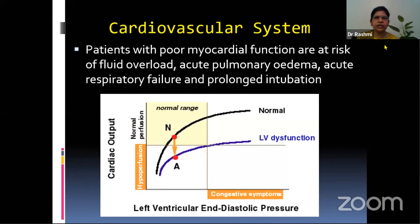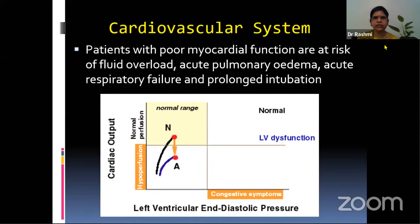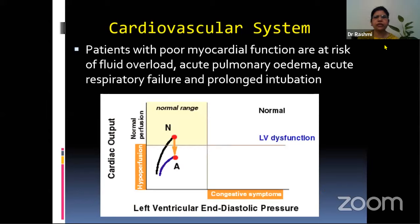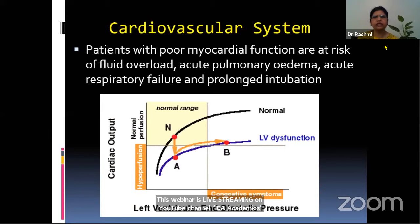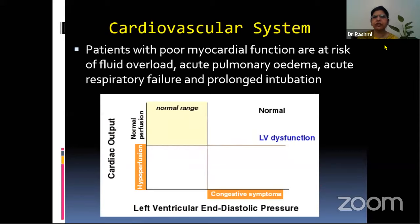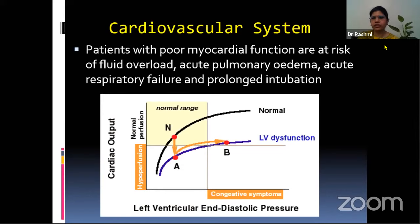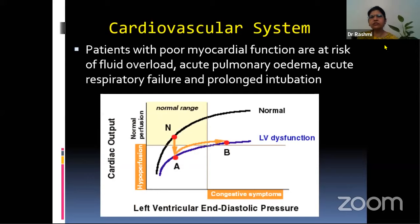This is the Frank-Starling curve. When we give intravenous fluids, the left ventricular end-diastolic pressure increases and consequently cardiac output also increases. However, in patients with poor myocardial function, they are at risk of fluid overload, acute pulmonary edema, acute respiratory failure, and prolonged intubation. So it is a double-edged sword, especially in patients who come with cardiomyopathies — whether to load them with intravenous fluids or not.